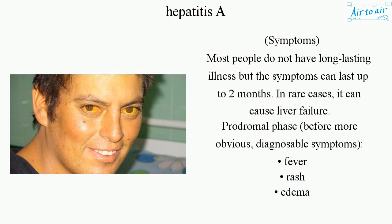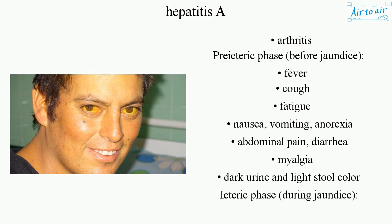Symptoms: Most people do not have long-lasting illness, but symptoms can last up to two months. In rare cases, it can cause liver failure. The prodromal phase occurs before more obvious, diagnosable symptoms and may include fever, rash, edema, and arthritis.